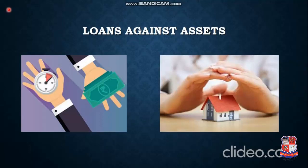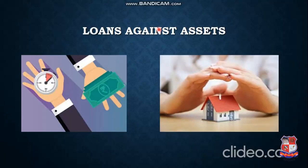One more source is loans against assets. A person may utilize some asset — for example, land or his home — and based on the valuation of that home or land he will get some amount of money. After getting money he grows his business, and after earning profit he needs to repay that loan. After repaying the loan the asset is owned by that person again. For a certain time interval that asset is mortgaged. These assets may be valuable things like gold, home, or land. That is loan against assets.